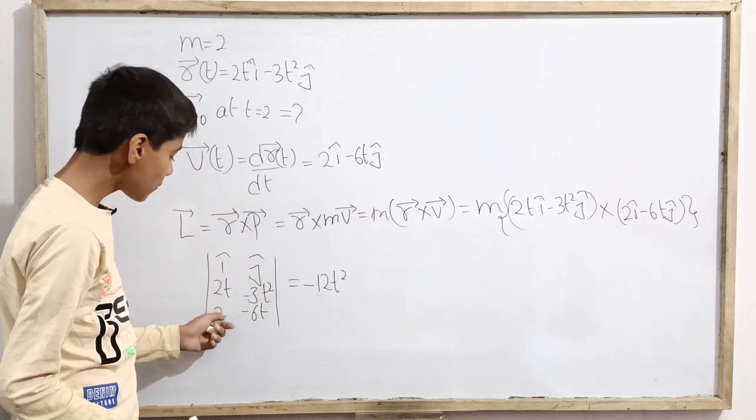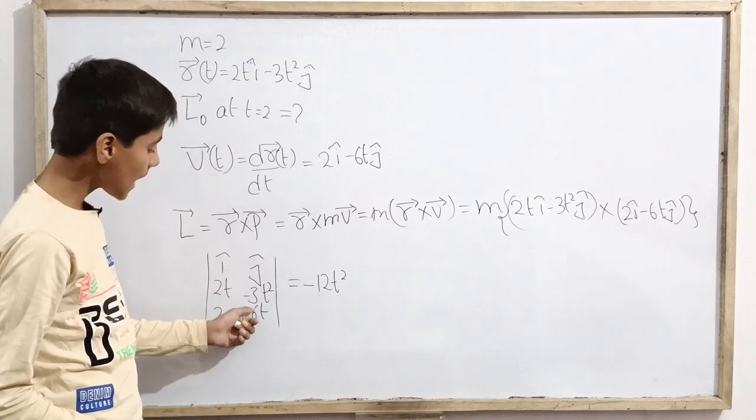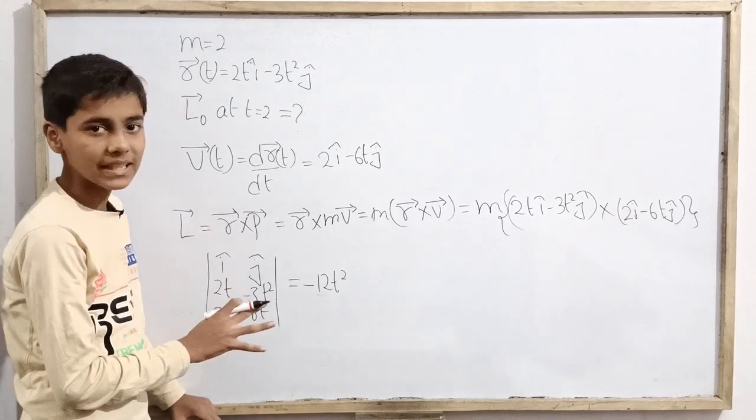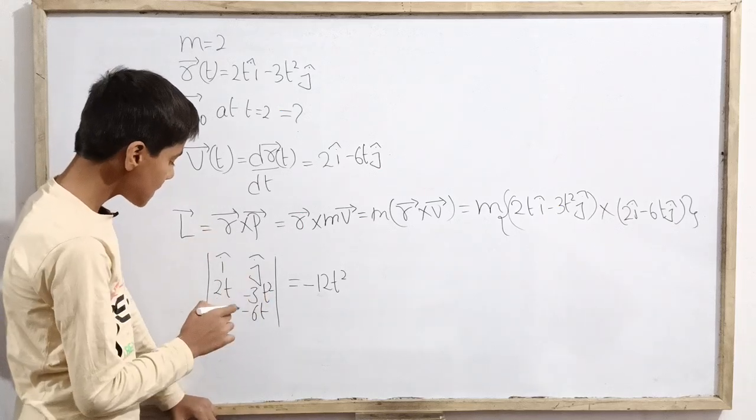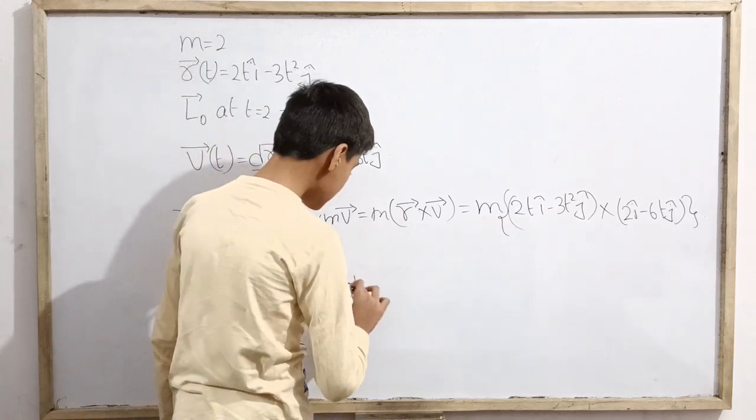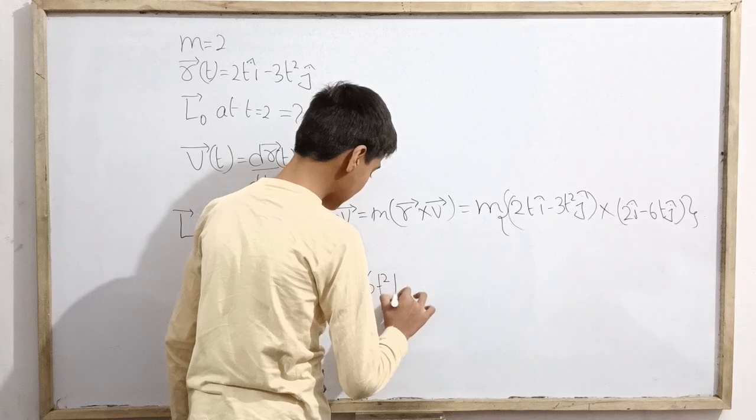But here we have j cap cross i cap, which is negative of i cap cross j cap. So that will be negative k cap. This is minus 6t square and a negative k cap, which is really plus 6t square k cap.